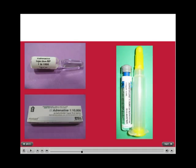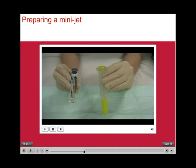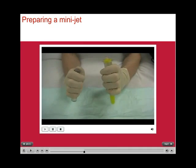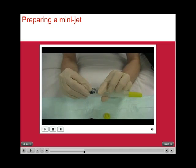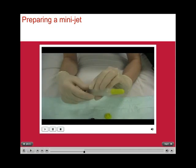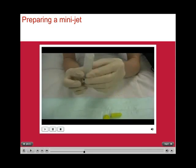Here are some pictures of different concentrations of adrenaline. In the ampoule on the top left, you can see that it is 1 mg in 1000. While on the mini-jet to the right, which holds 10 mls, it is actually 1 mg in 10,000. This short video shows how you should prepare a mini-jet. It is actually quite easy, but like most things, it is easy when you know how.